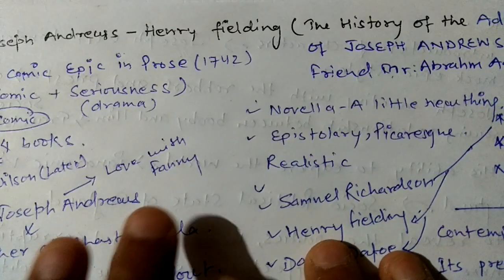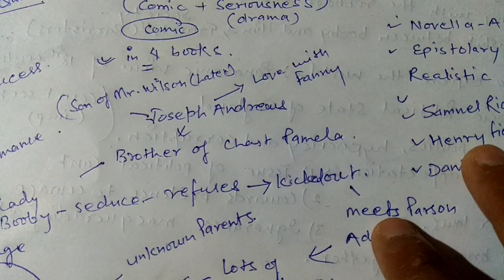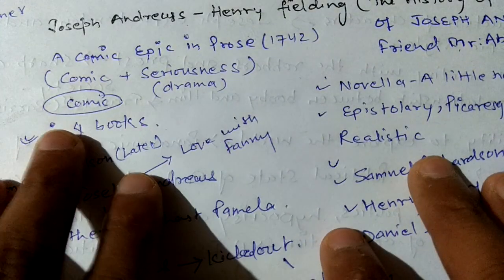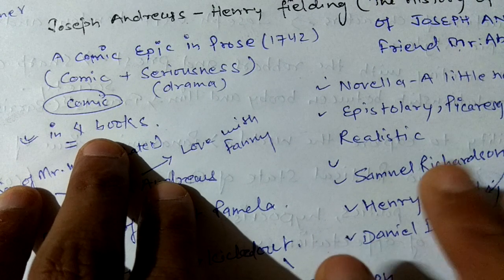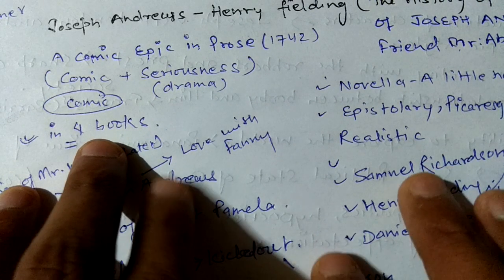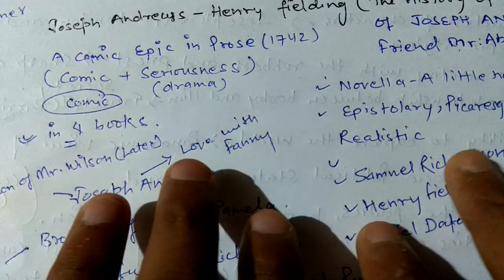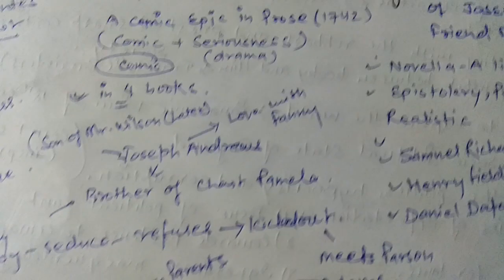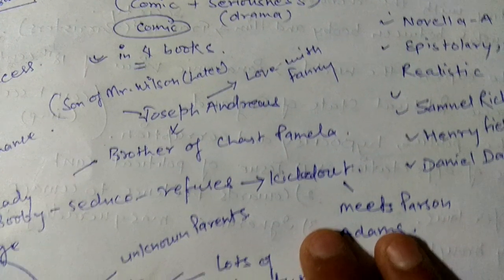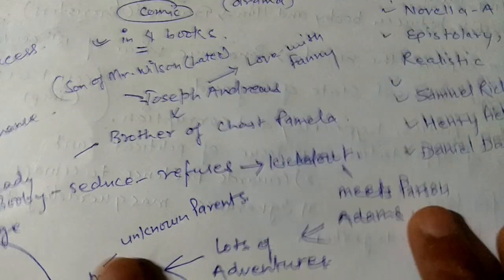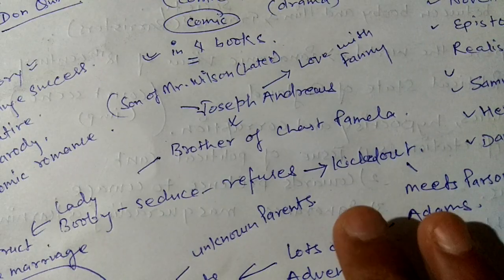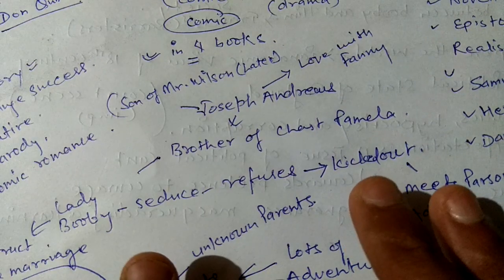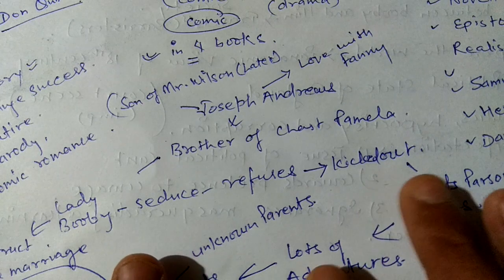So here are the notes for today. This book has four books, and today we are going to talk about Book 1 and Book 2 — a short summary, an outline of the work, and we will also be talking about the characters.